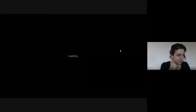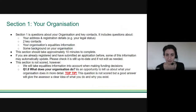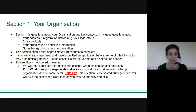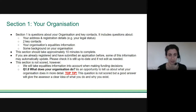Section one of the application covers details about your organization. This section isn't scored, but question 1.8 asks what your organization does — this is a good opportunity to tell assessors about your organization in a bit more detail. A good answer will give assessors a clear idea of what you do and why you exist, setting the tone for the rest of your application. If you're a group formed for a specific purpose, make sure you've outlined that clearly.